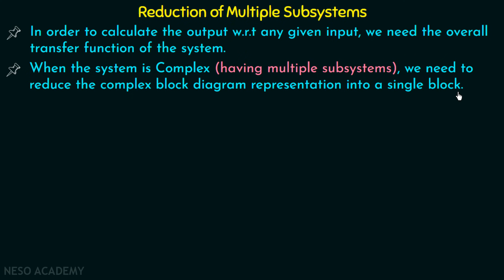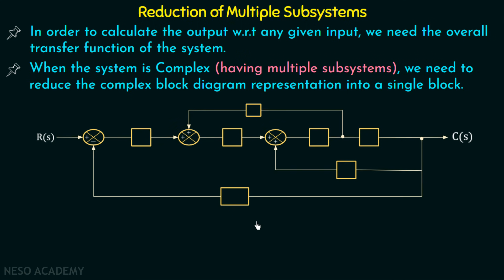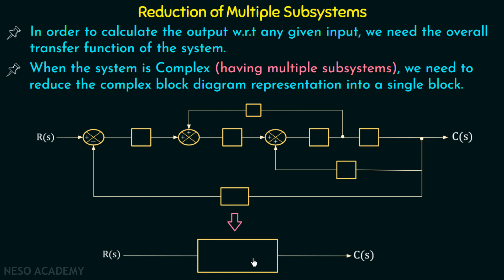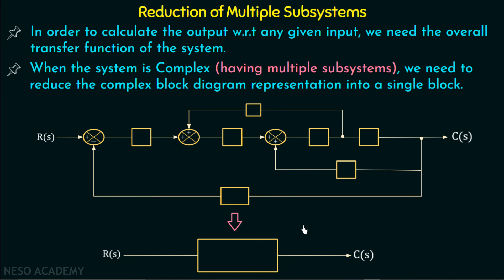Let us take an example of a practical control system. A practical control system consists of multiple subsystems with interconnections of different blocks connected by branches and arrows. If we want to calculate the overall transfer function of this multiple-subsystem setup, we need to convert it into a single block where that block represents the overall transfer function. The procedure by which we reduce this complex block diagram into a single block is called block diagram algebra, and it is based on certain rules called block diagram reduction rules.